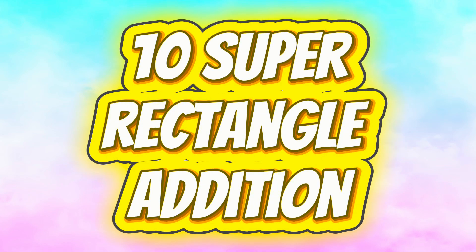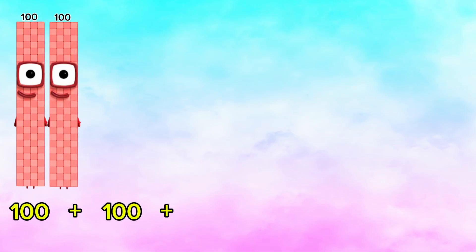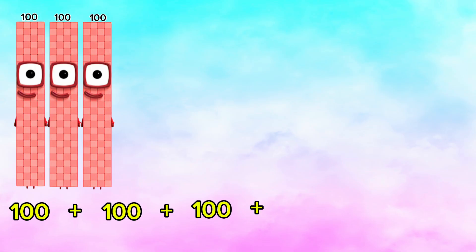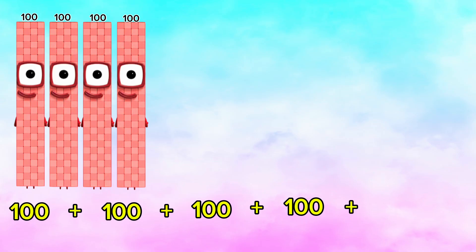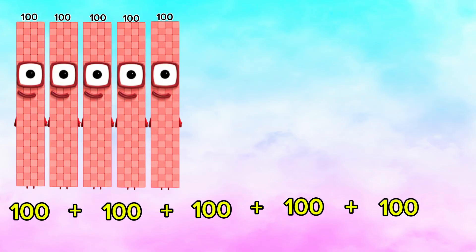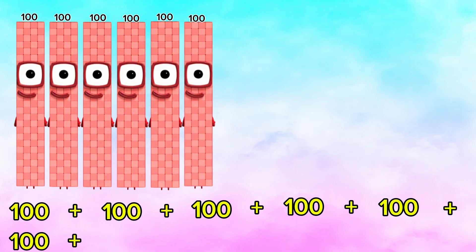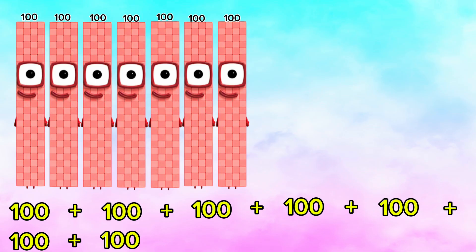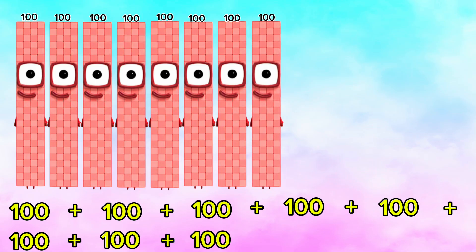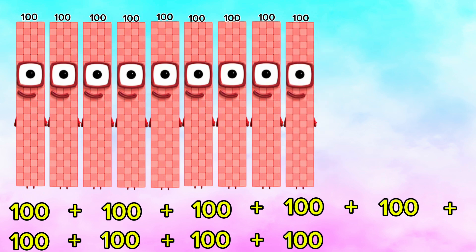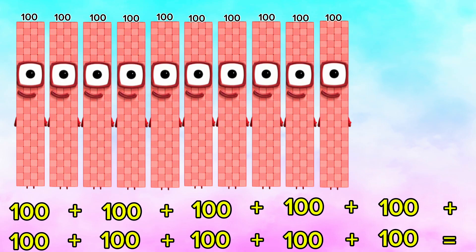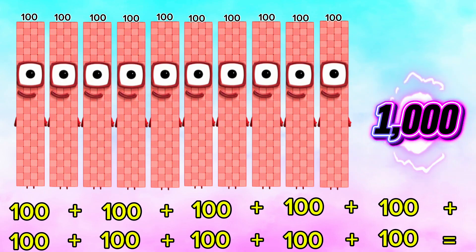Super Rectangle Addition: 100 plus 100 plus 100 plus 100 plus 100 plus 100 plus 100 plus 100 plus 100 plus another 100 is equals to 1,000.